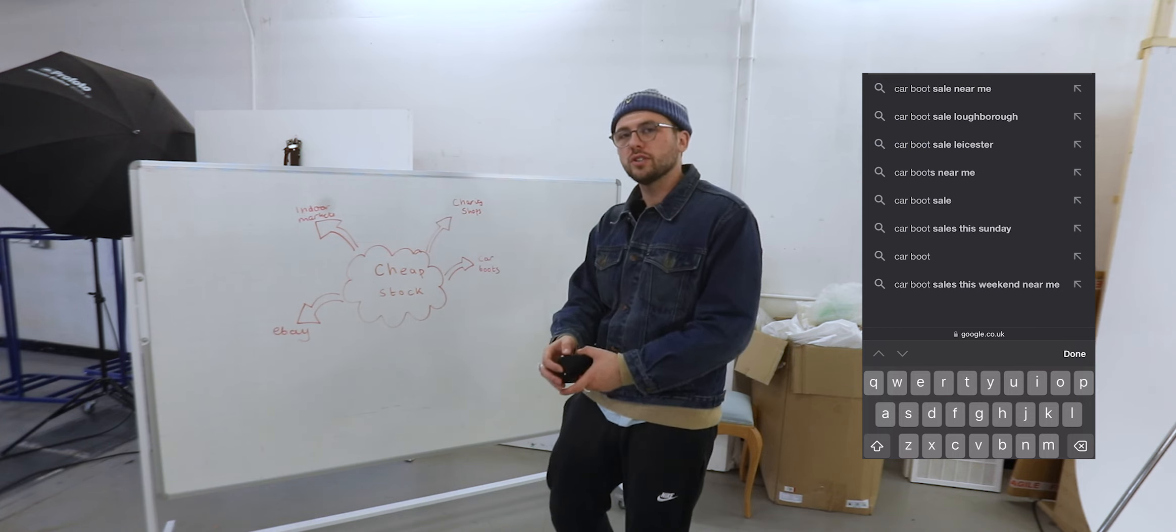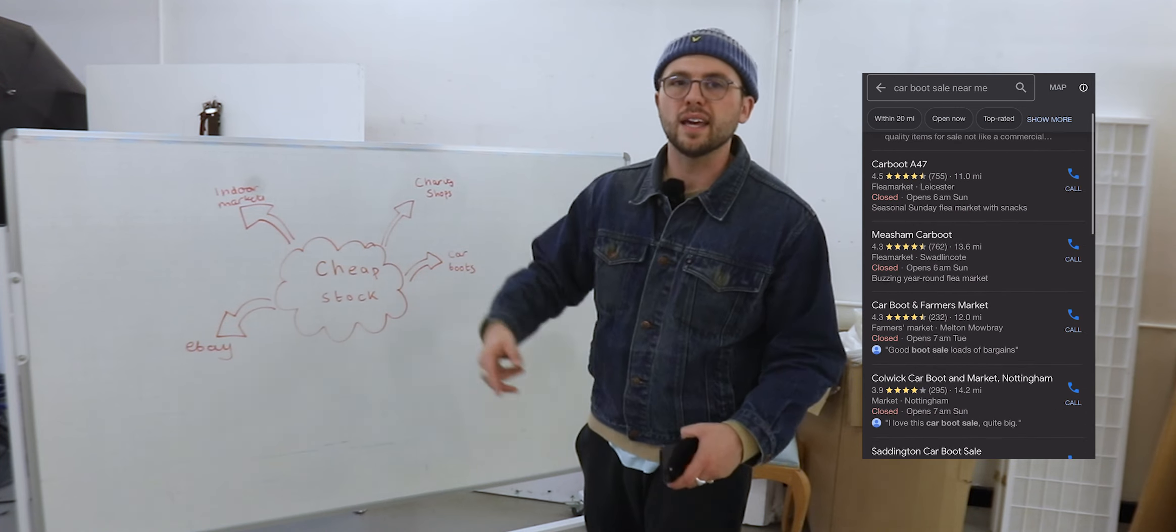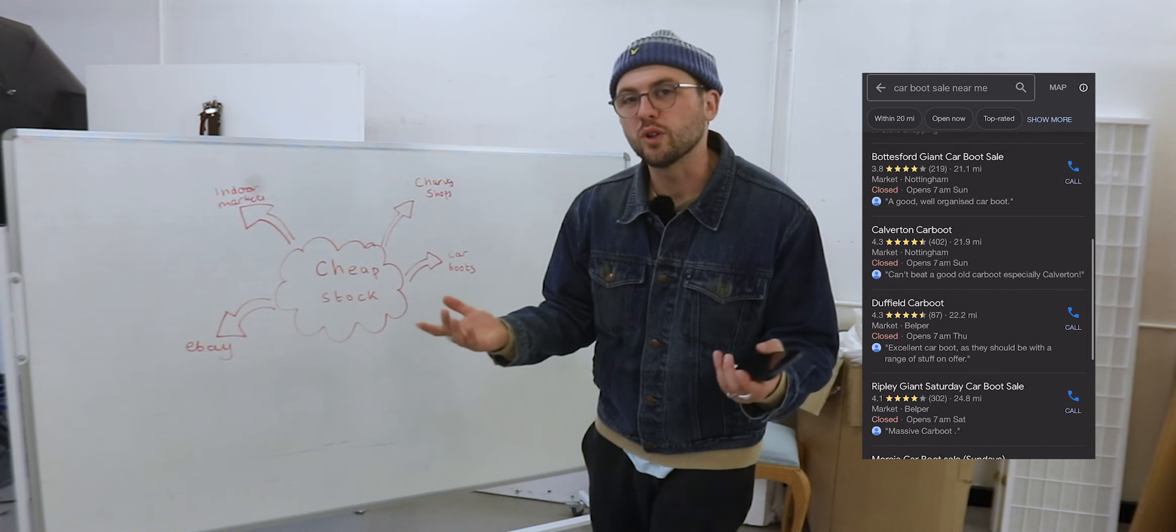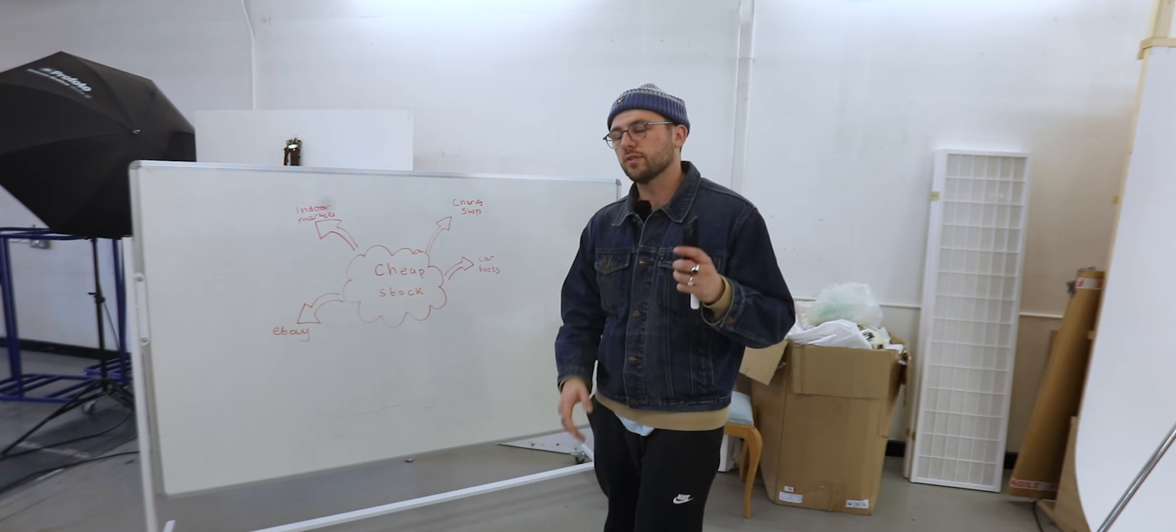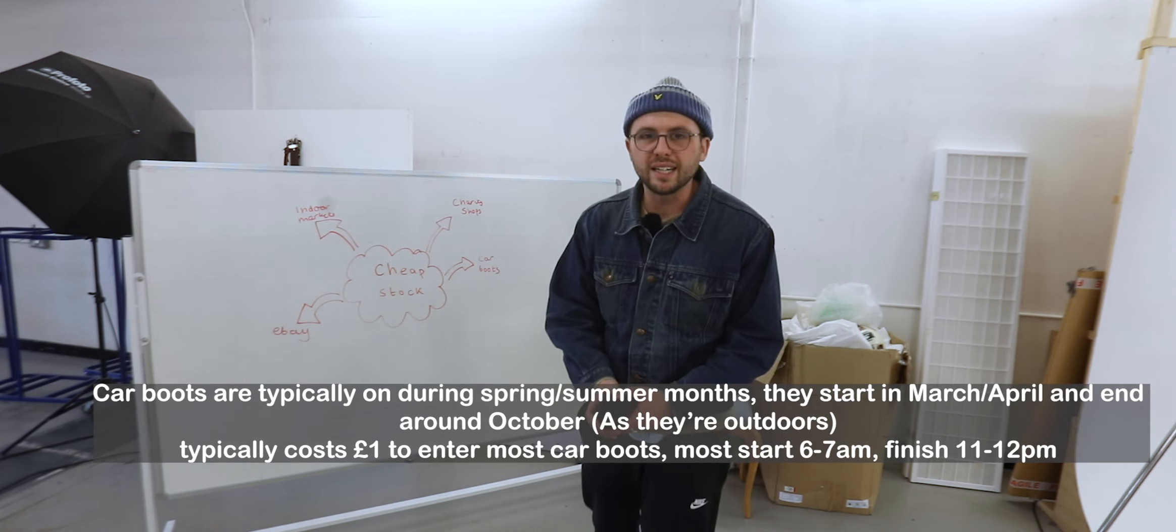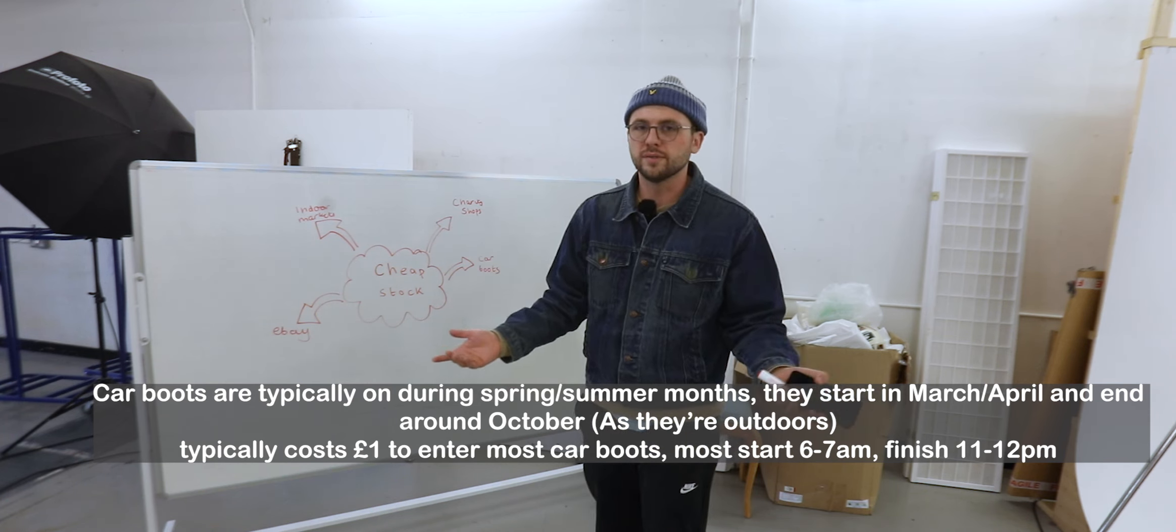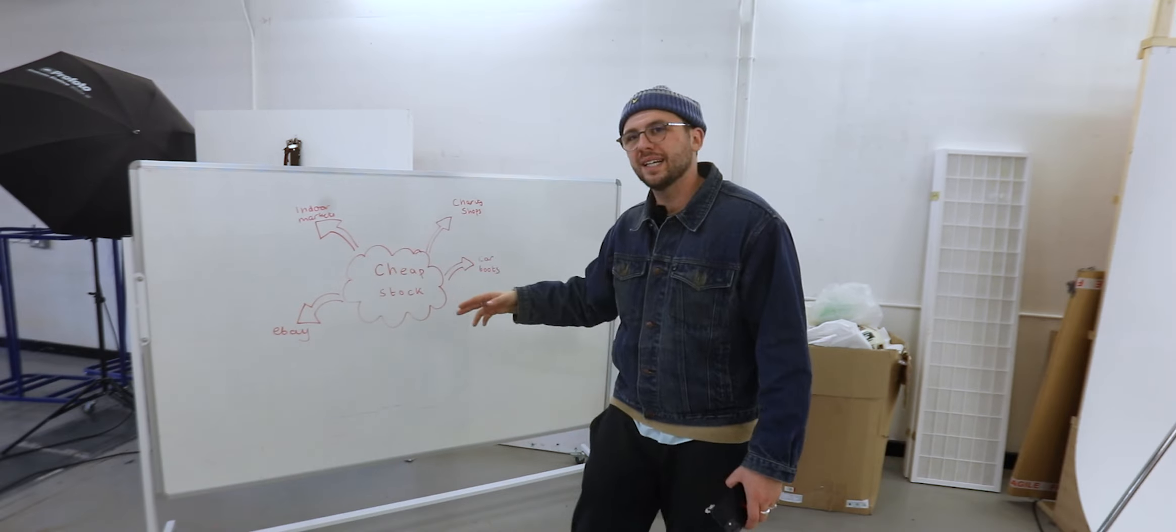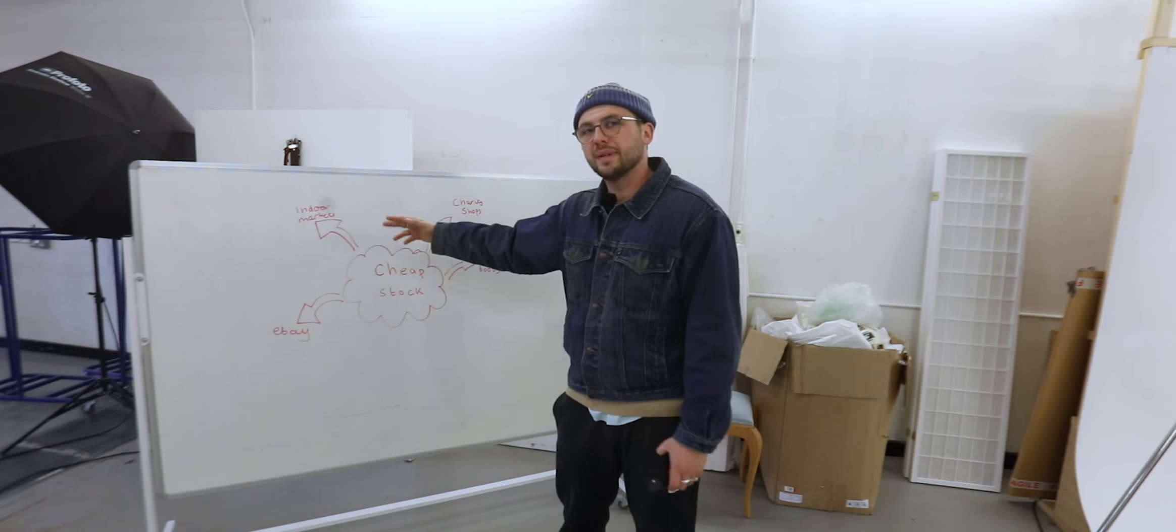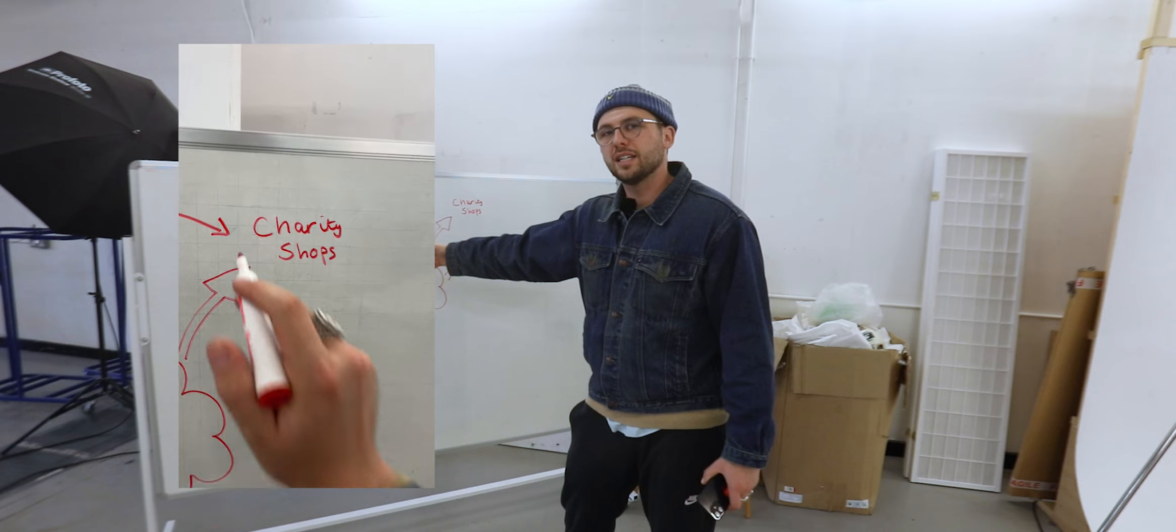Car boots. Now, car boots, for those that are in the UK, you already know what it is. It is like Margaret and Peter getting their boot open at 5.30 in the morning, in a field somewhere in Mansfield or anywhere around them and they are selling you their own stuff. The reason why this is considered cheap stock is the people at the car boots are not selling it with the intention that they're selling it to somebody who wants to make money out of it. They're just clearing stock. Indoor markets are basically kind of the same as car boots, but you do get some independent sellers there.